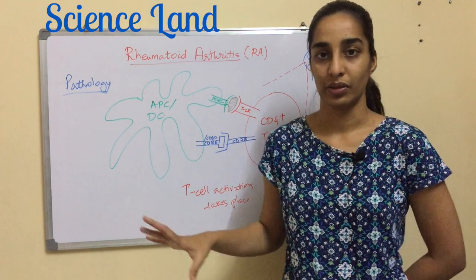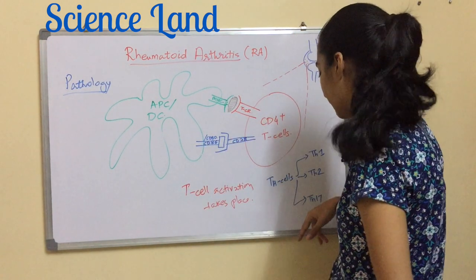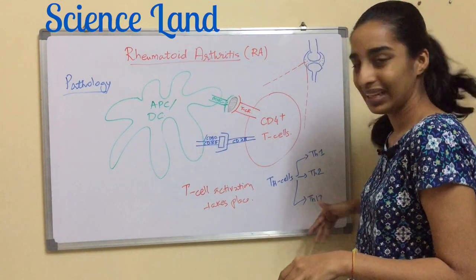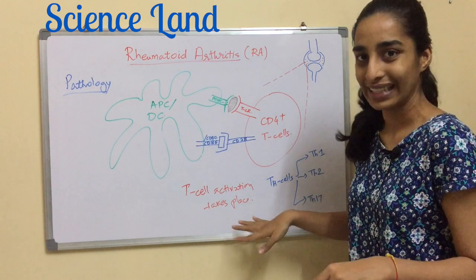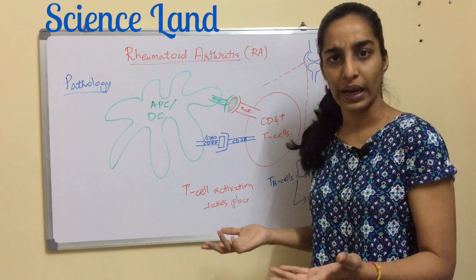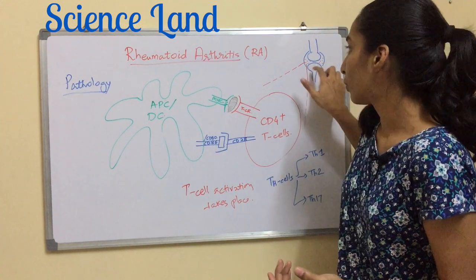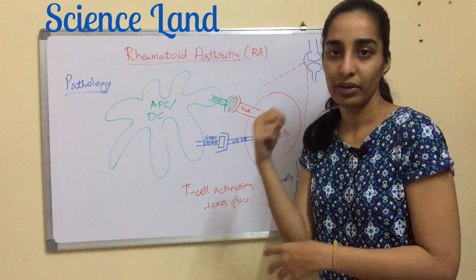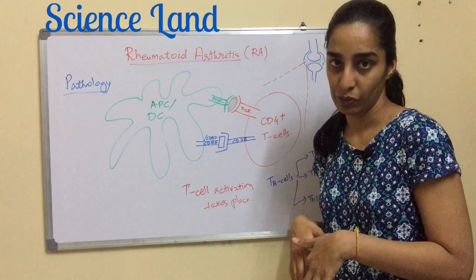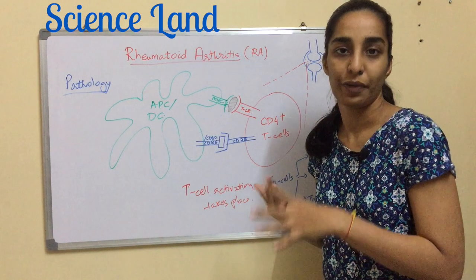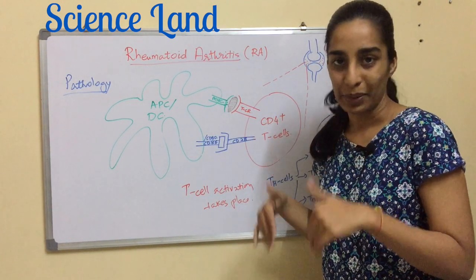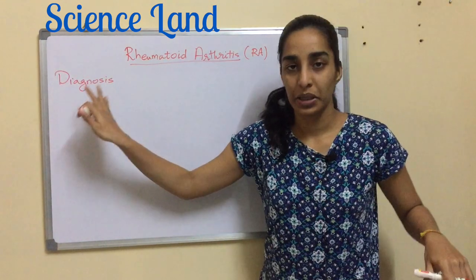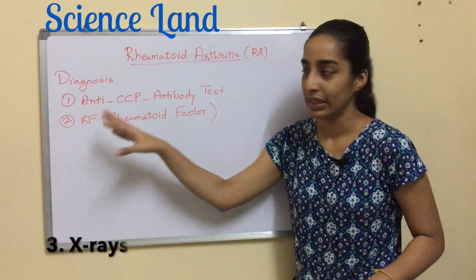Research also indicates that Th17 is important in the pathology of RA. These three subsets of Th cells produce cytokines, and once cytokines are present near the joint, more immune cells — including neutrophils and macrophages — enter the picture, increasing inflammation until it becomes chronic.